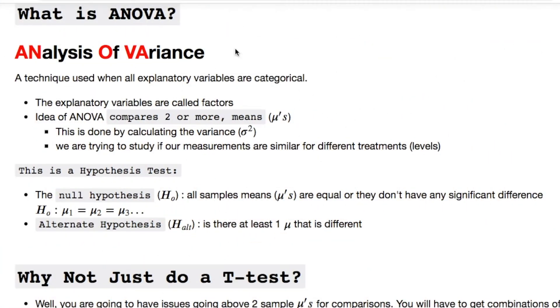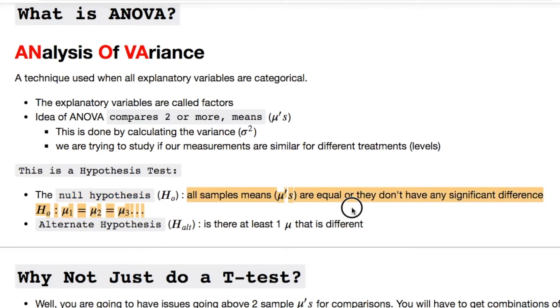Analysis of variance is a technique when all your explanatory variables are categorical. The explanatory variables are called factors. The idea of ANOVA compares two or more means, whereas if you did a t-test it would compare two. The way that this is achieved is by calculating the variance. This is a hypothesis test.